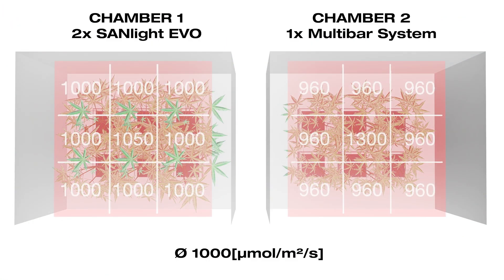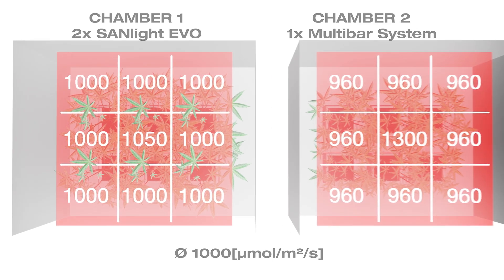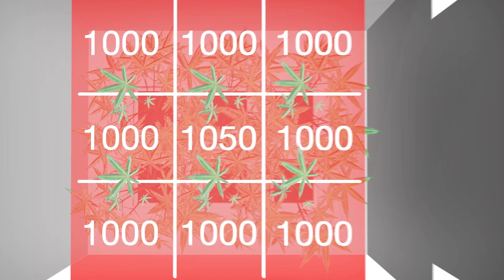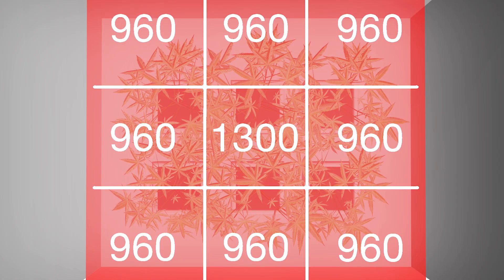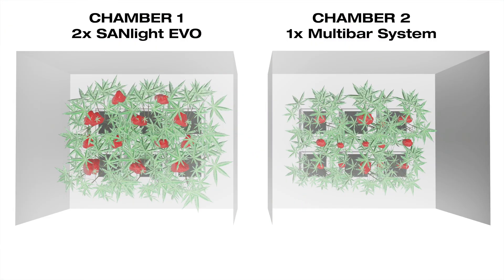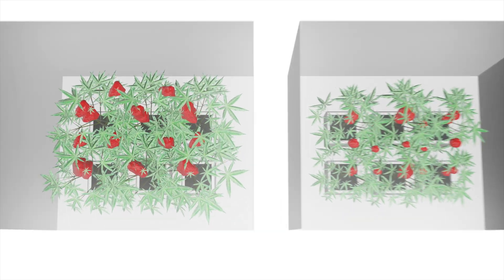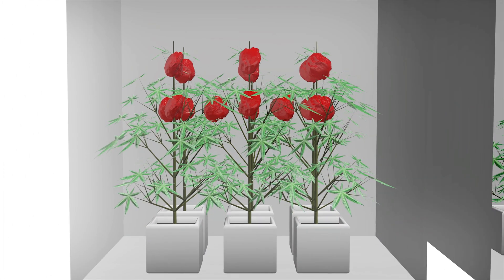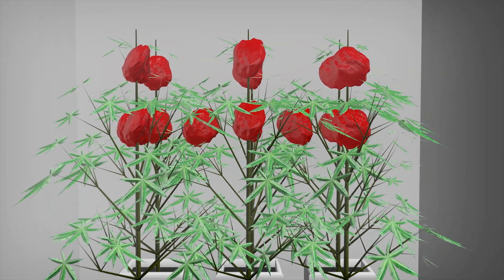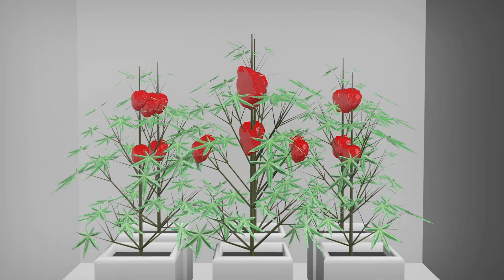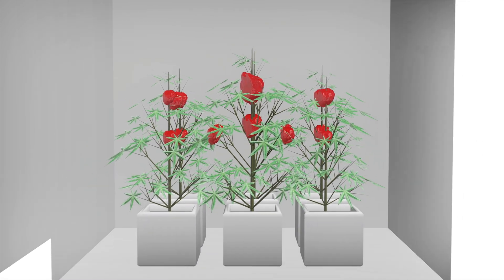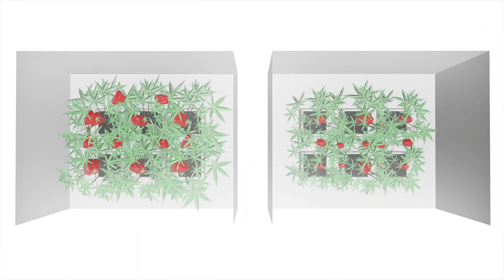A uniform light distribution allows us to get closer to the maximum intensity because the gap between the average and maximum intensity is smaller. This raises the potential yield. The uniform light distribution also leads to a more equal quality of the end product since all plants are grown under the same conditions. While the flowers and fruits are equally big in the uniform chamber, only the central plant of the other chamber achieves the highest yield. In the end, a uniform light distribution leads to a more effective use of electricity.